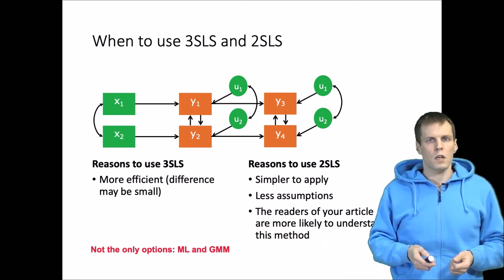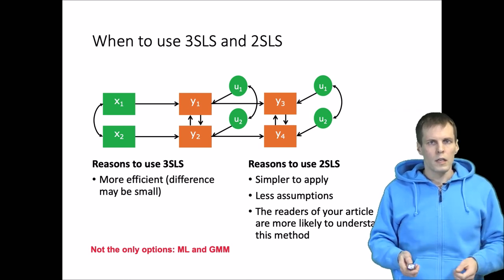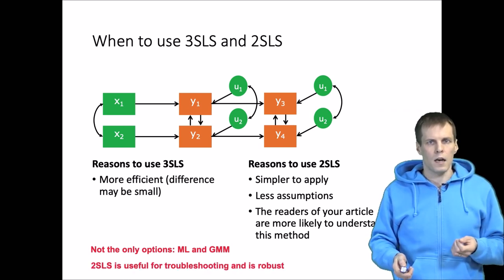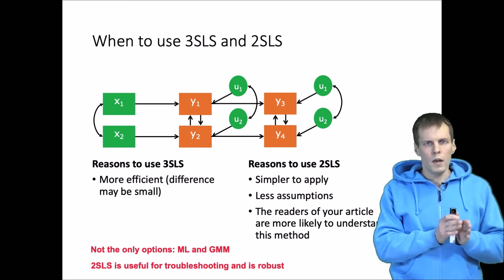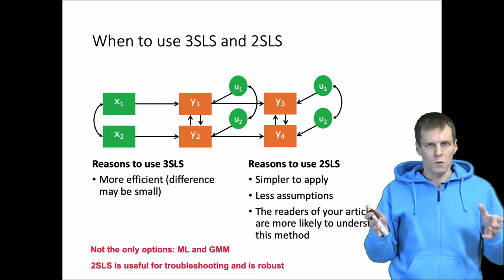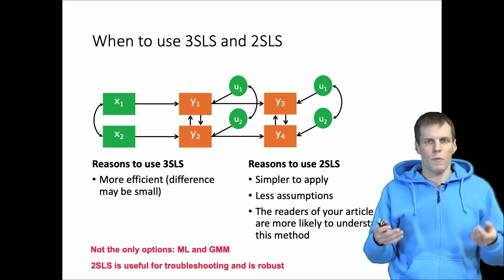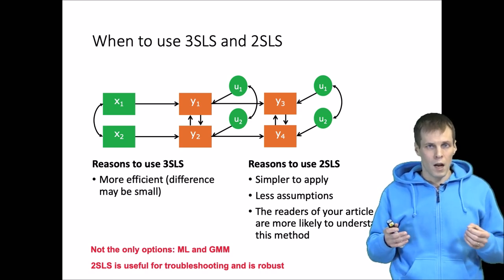Two-stage least squares has a use, and that use is in diagnostics. Because two-stage least squares estimates one equation at a time, if you have a problem with your full system—for example, you cannot get your maximum likelihood estimates to converge—then you can try estimating one equation at a time.